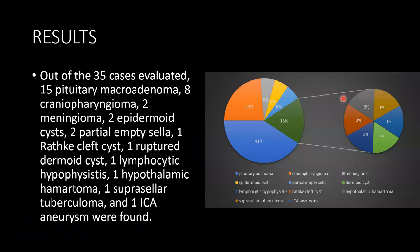Results. Out of the 35 cases evaluated, 41% were pituitary adenoma and 23% were craniopharyngioma. We also had 2 meningiomas, 2 epidermoids, 2 partial empty sellae, 1 Rathke's cleft cyst, 1 ruptured dermoid cyst, 1 lymphocytic hypophysitis, 1 hypothalamic hamartoma, 1 suprasellar tuberculoma, and 1 intracranial aneurysm.